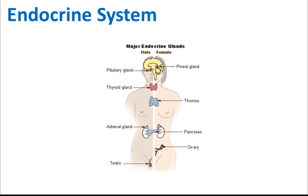The endocrine system. You need to know the name of all the glands except the pineal gland, which is not important in our syllabus. All other glands are very important. The pituitary gland is inside the brain, the thyroid gland is in your neck, the thymus gland is inside your chest, the adrenal glands are above the kidneys, the pancreas is in your stomach, and then the testis and the ovary.